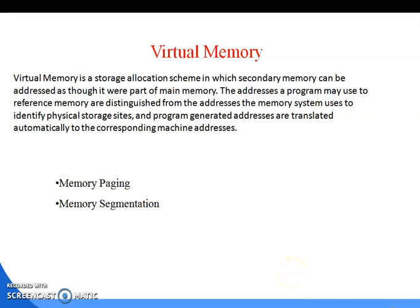Good morning. Today we are going to discuss virtual memory. Virtual memory is a storage allocation scheme in which secondary memory can be addressed as though it were part of the main memory. The addresses a program may use to reference memory are distinguished from the addresses the memory system uses to identify physical storage sites, and program-generated addresses are translated automatically to the corresponding machine address.